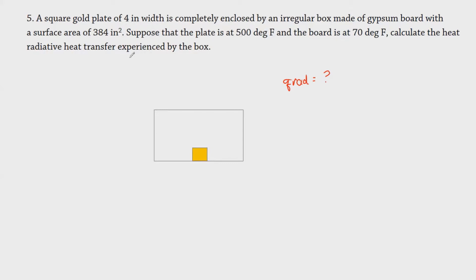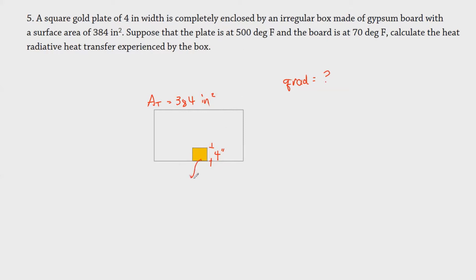The square gold plate has a dimension of four inches per side, so area is four inches. The irregular box has a total surface area of 384 inches squared. The plate is at 500 degrees Fahrenheit and the gypsum board is at 70 degrees Fahrenheit.